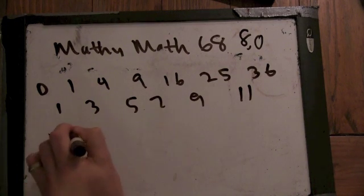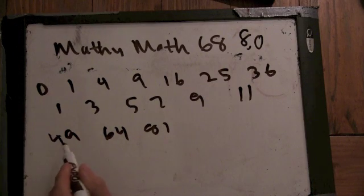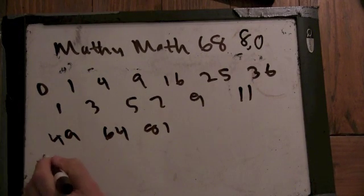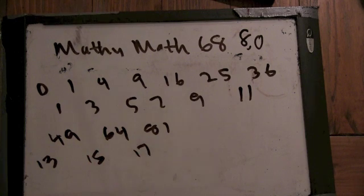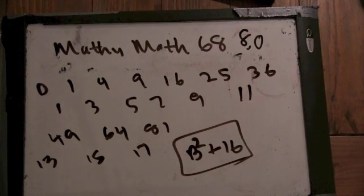They get farther apart as the numbers get bigger. 11. The next one's going to be 49. 64, 81. Okay, so the difference is 13, and 15, and 17. So you have b squared plus 16 and your thing has to be a perfect square. Okay.